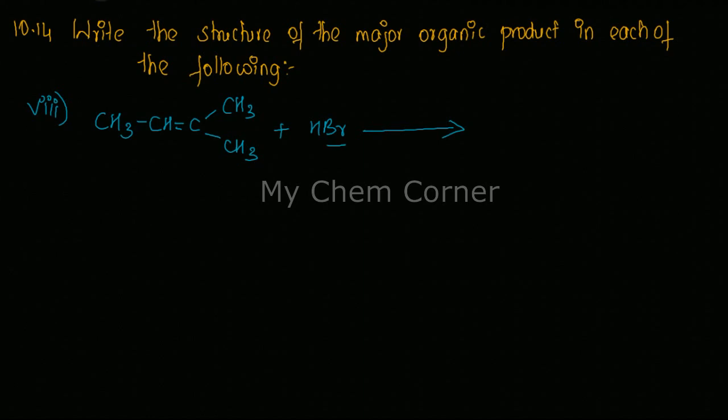So we have two carbons over here, one with one hydrogen, the other one with no hydrogen. Obviously, Br will form a bond with both carbons, but out of that, the one where it contains a lesser number of hydrogen will be the major product. So let's draw both the products.